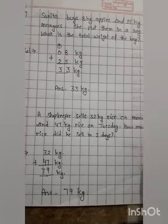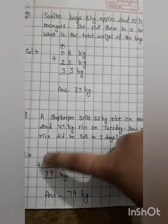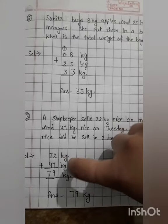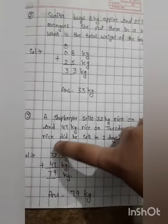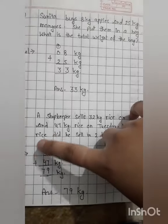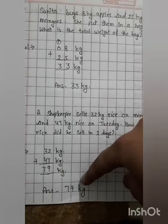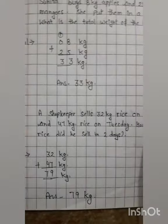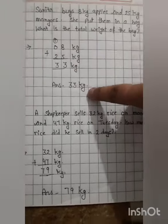We will write 32 kg, then 47 kg, and we will add them. 7 plus 2 is 9. 4 plus 3 is 7. Our answer is 79 kg. Remember to write the units kg.